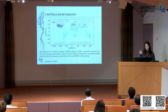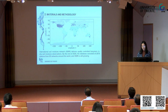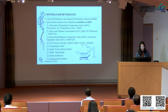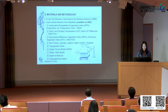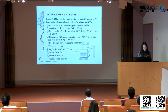We used in-situ measurements from the ISMN — the International Soil Moisture Network. This shows the distribution of those stations. For the variables, we use land surface features, and they are all available on Google Earth Engine.